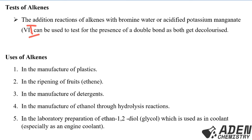The uses of alkenes: number one, they are used in the manufacture of plastics; they are used in the ripening of fruits, especially ethene; they are used in the manufacture of detergents; used in the manufacture of ethanol through hydrolysis reactions. In the laboratory, preparation of ethane-1,2-diol — called glycol — is used as a coolant, especially as an engine coolant. That is the end of our lesson today. Thank you for watching.